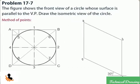Draw the isometric view of the square and on it mark the mid points 1, 2, 3, and 4 of its sides.